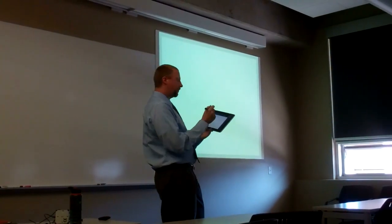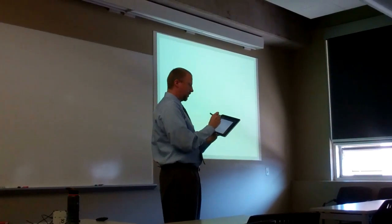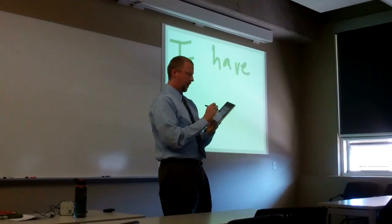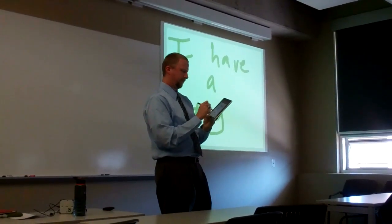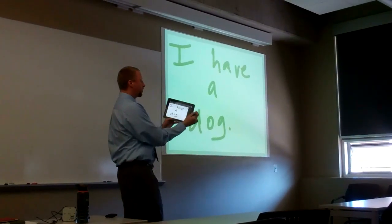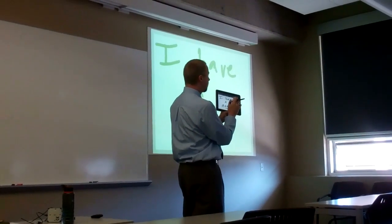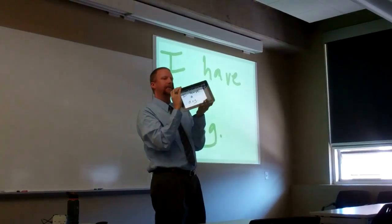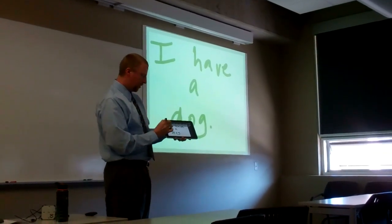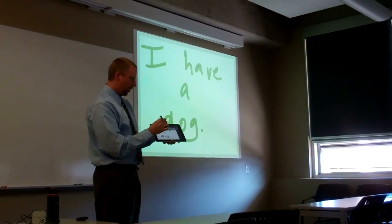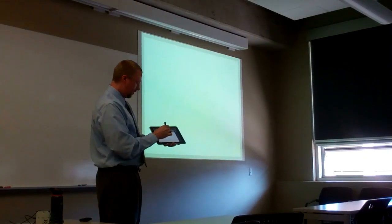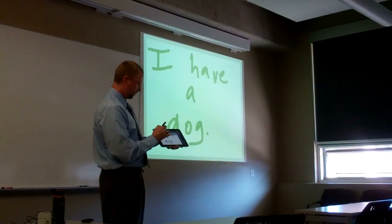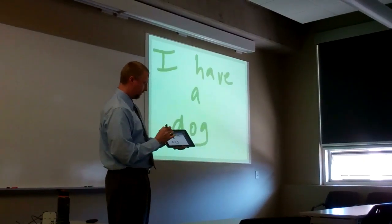Doceri saves all of your writing as a timeline. I'm just going to write on the projector: 'I have a dog.' At the top there's a button that opens up the timeline — you can see it being green at the top. It saves how you do it, and you can speed up or slow down that illustration. There's very slow, and there's very fast.